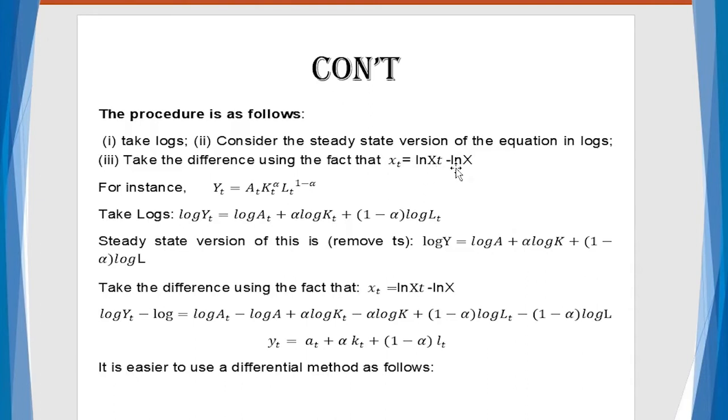Steady-state version means at the point in which the T have been linearized. You remove from all the variables, and then you solve for the parameters there. And then the third is to take the difference using the fact that x_t equals the difference between the log of that variable at time t less the steady-state value of x. So for instance, I have here y_t, which is the production function. And if you want to log linearize this one, see what you do. Just take the log of them, and it's just simply equal to this. And then steady-state version now means that we are not putting t into function. So that's why you just write everything the same, but removing the t, the subscript t, indicating the time in which we are talking.